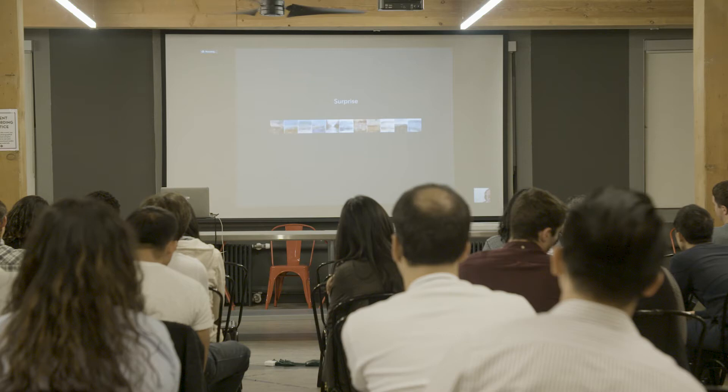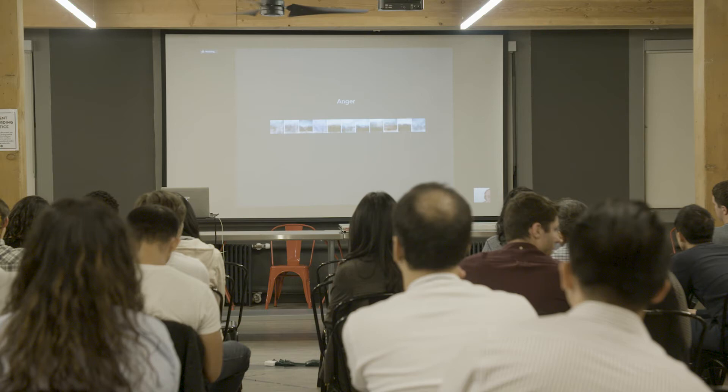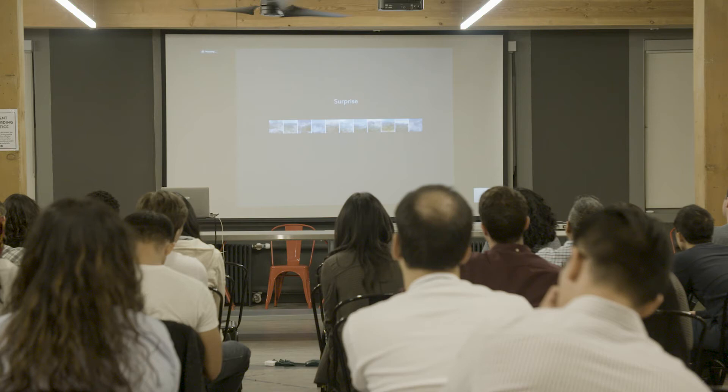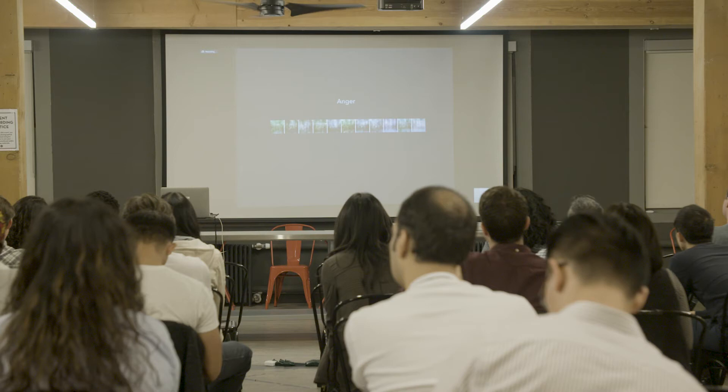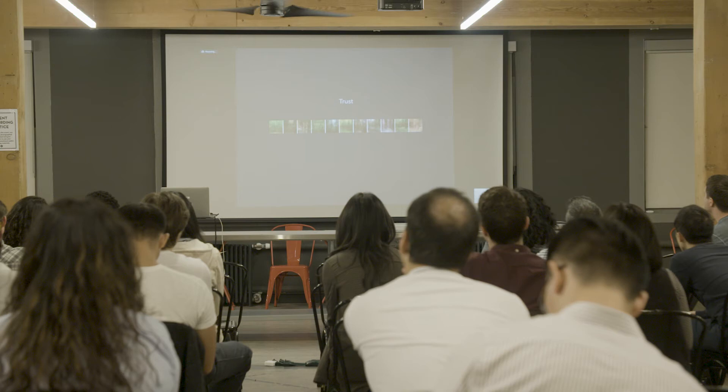I also tried doing landscape-specific generations. Here are 32 by 32 generated mountains — slightly blurrier, but I think the emotions still hold. And then forests. And that's my project.